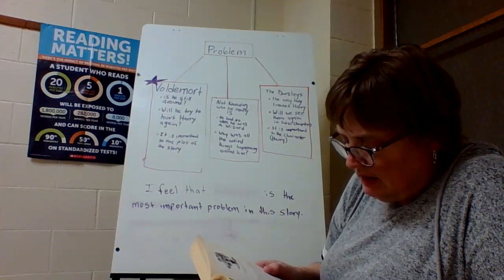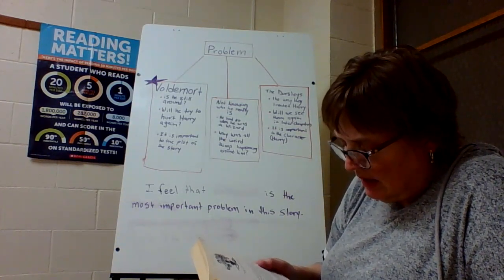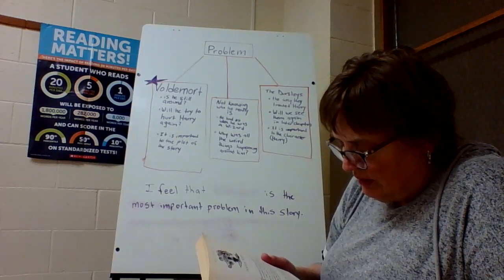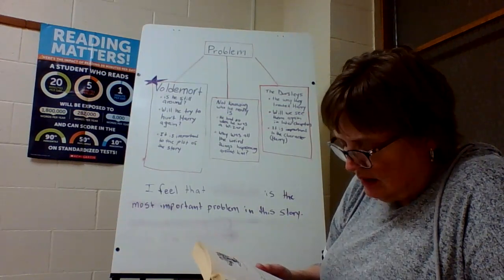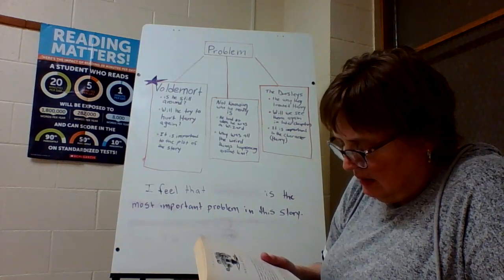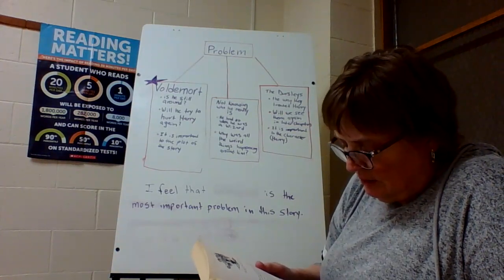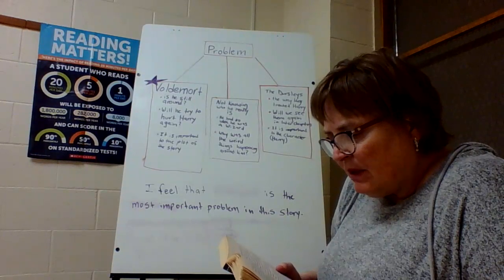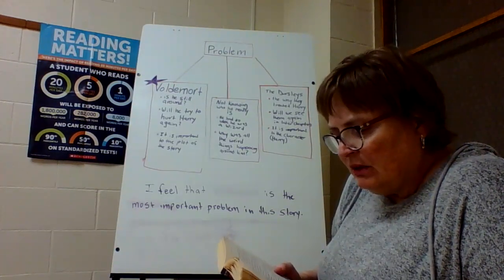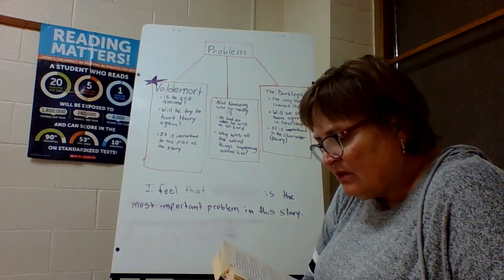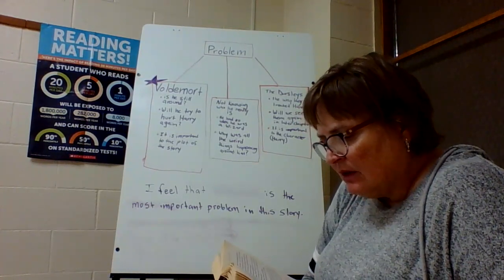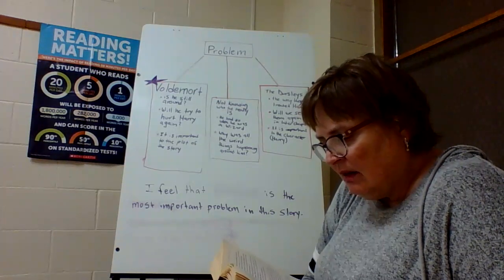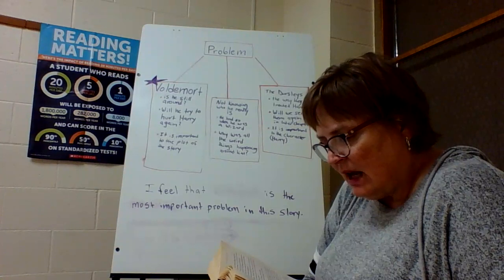Tap, tap, tap. 'All right,' Harry muttered, 'I'm getting up.' He sat up and Hagrid's heavy coat fell off of him. The hut was full of sunlight — the storm was over. Hagrid himself was asleep on the collapsed sofa, and there was an owl tapping at the window, a newspaper held in its feet. Harry scrambled to his feet, so happy he felt as though a large balloon was swelling inside him. He went straight to the window and jarred it open. The owl swooped in and dropped the newspaper on top of Hagrid, who didn't wake up. The owl then fluttered onto the floor and began to attack Hagrid's coat.